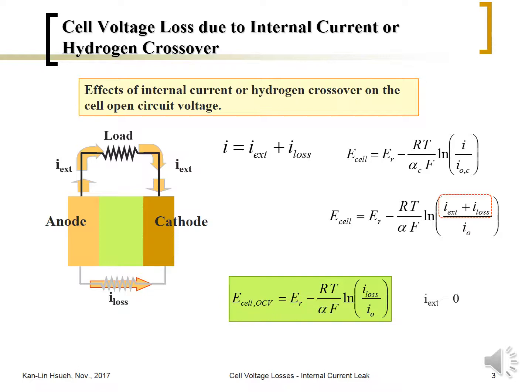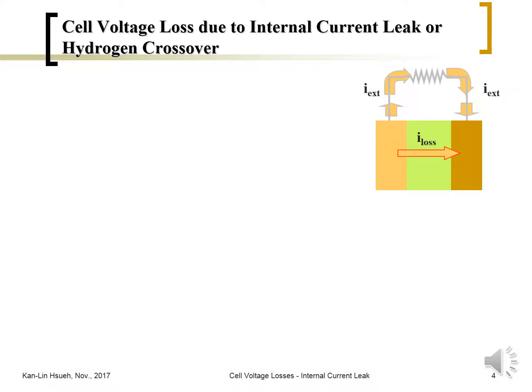So the cell voltage loss due to crossover or internal current can be expressed by this equation. The cell voltage loss due to crossover or internal leakage current, ΔV_crossover, is given by this term. If we plot the cell voltage against the current, then we have this plot.